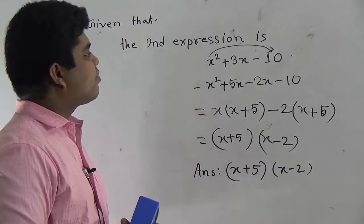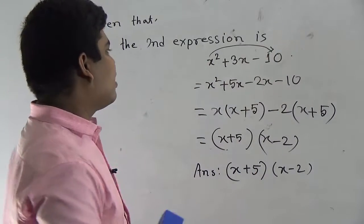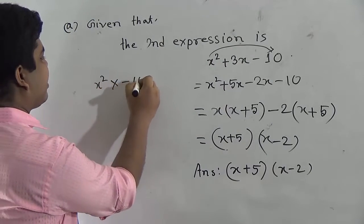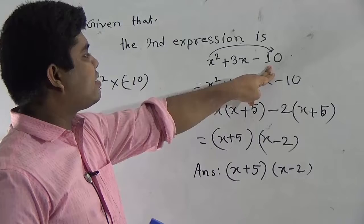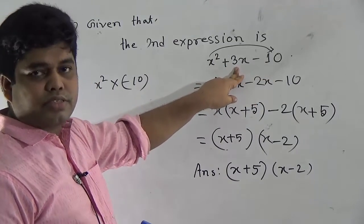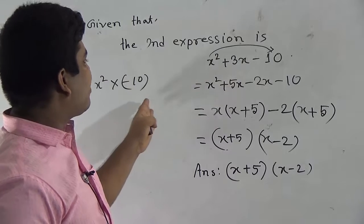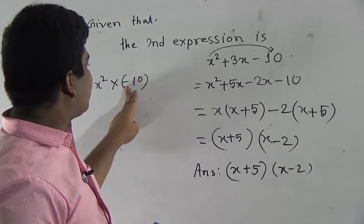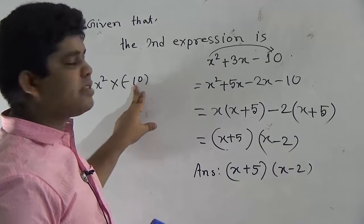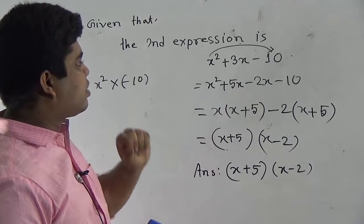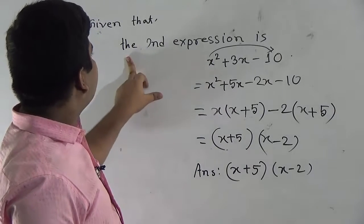For your better understanding, I discuss the middle term break again. First, you multiply the first term and the last term — that means x squared and minus 10 — and you must consider the sign, giving minus 10x squared. After that, notice the middle term, which is 3x. So if we subtract, we get plus 3, and if we multiply, we get minus 10x squared. We convert 10 into factors: 5 and 2, and since 5 is greater, we subtract 2 from 5 and get 3. I hope you have understood how to solve middle term break. So question number A is done. After completing your answer, you must write the answer.